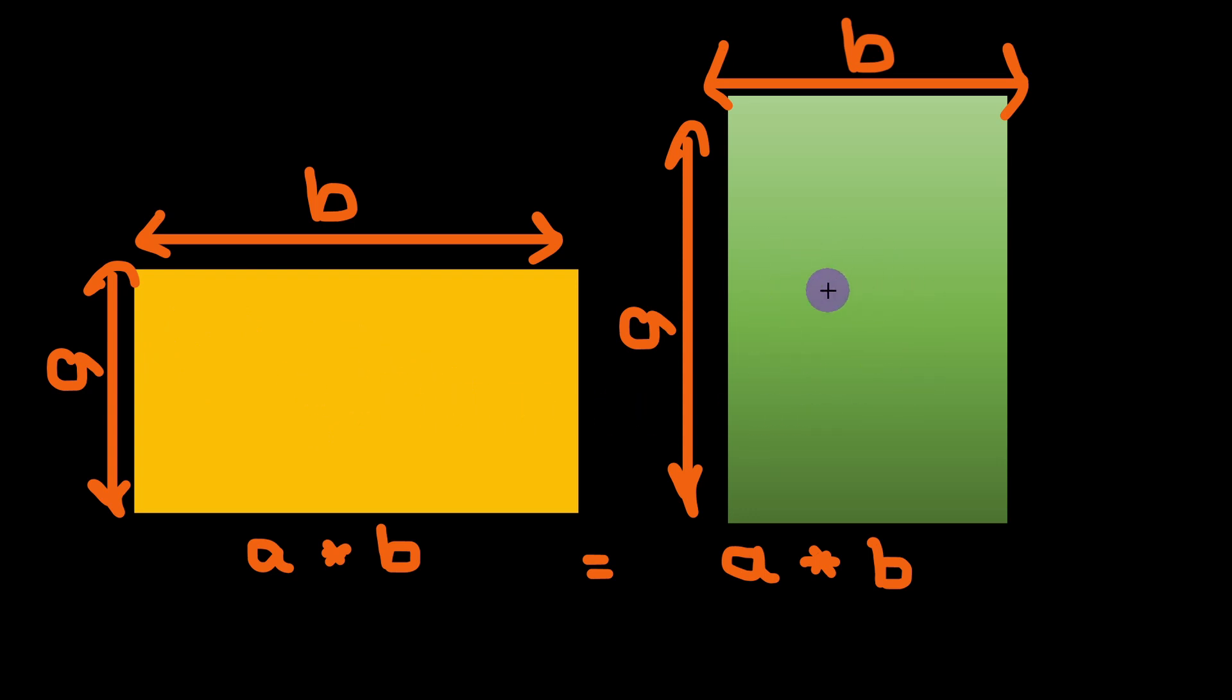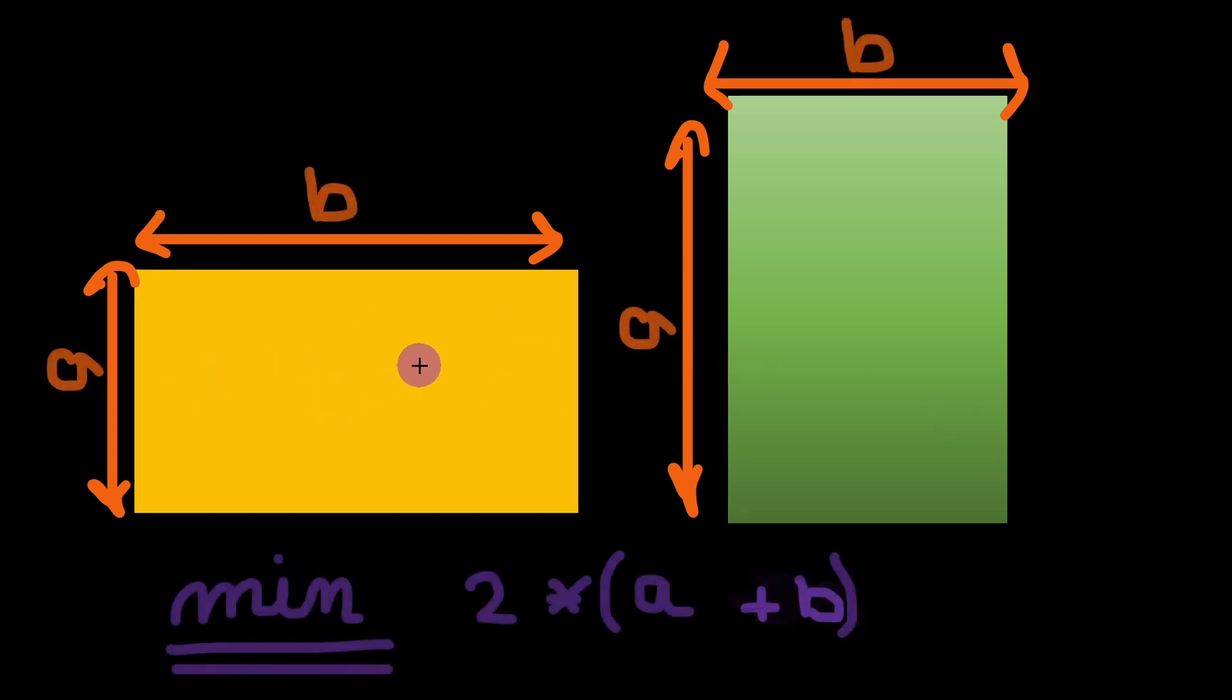However, the perimeter which is A plus B times 2 would be different in these two cases, and our function should return the minimum perimeter that we can find for one same area but in different shapes.